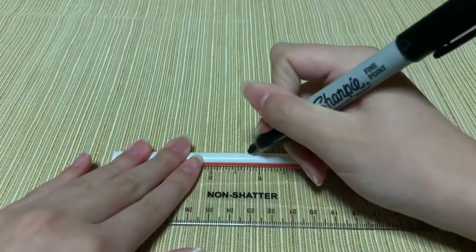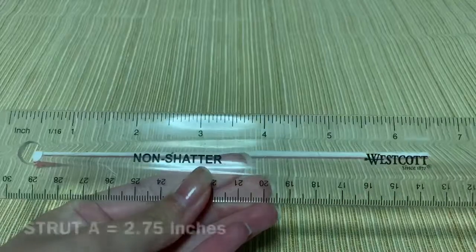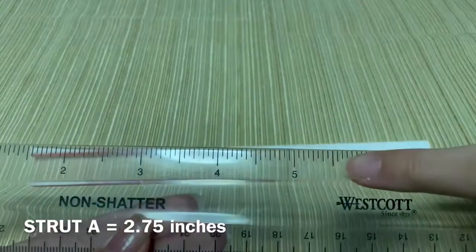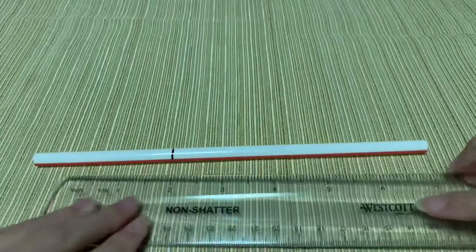Take the straws for strut A and cut them to whatever size you'd like. My strut A's will be 2.75 inches, so measure and cut along the marking.